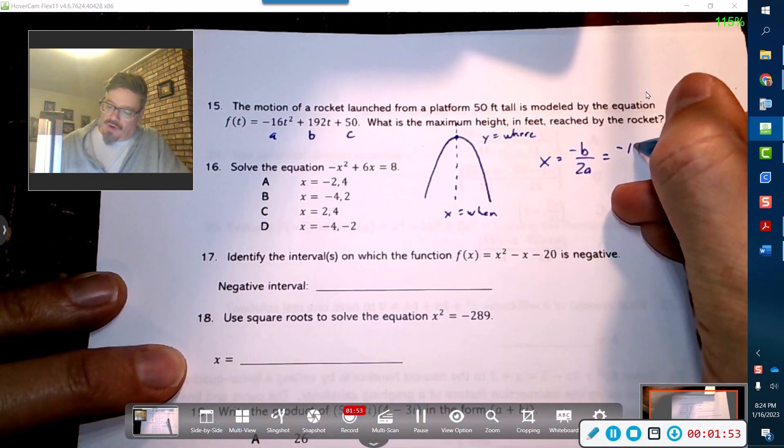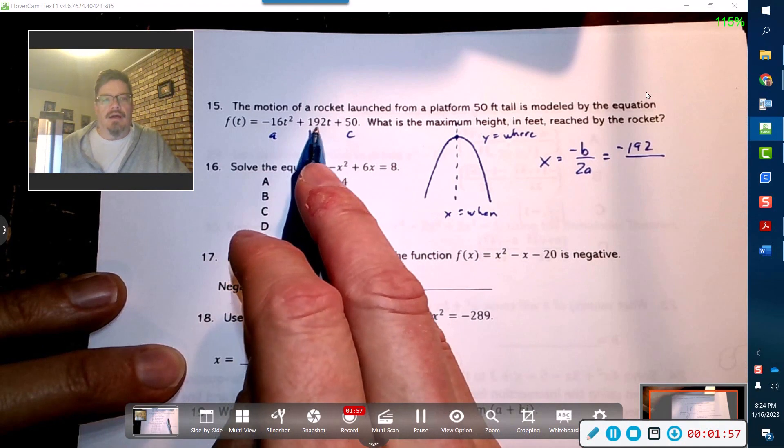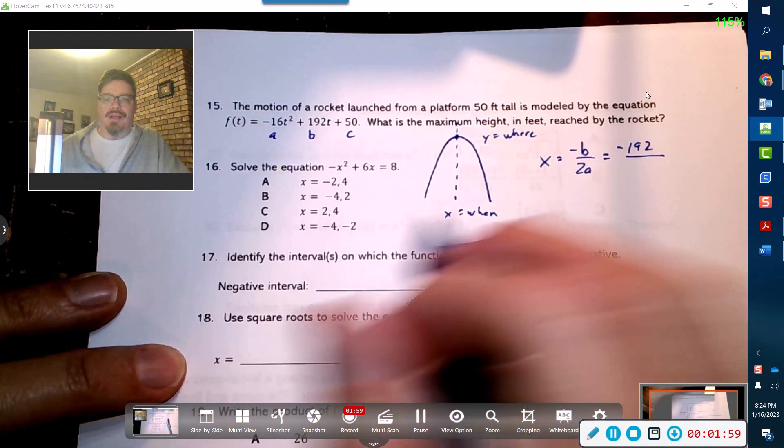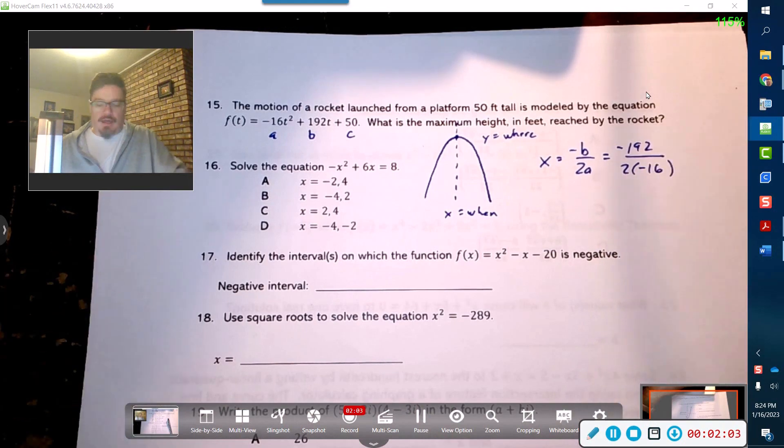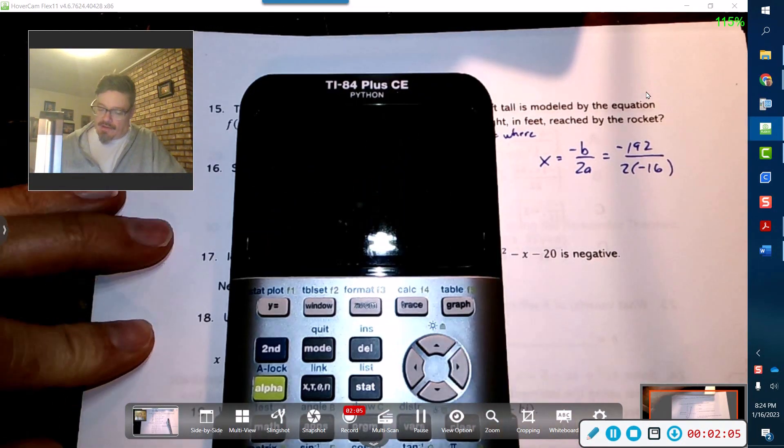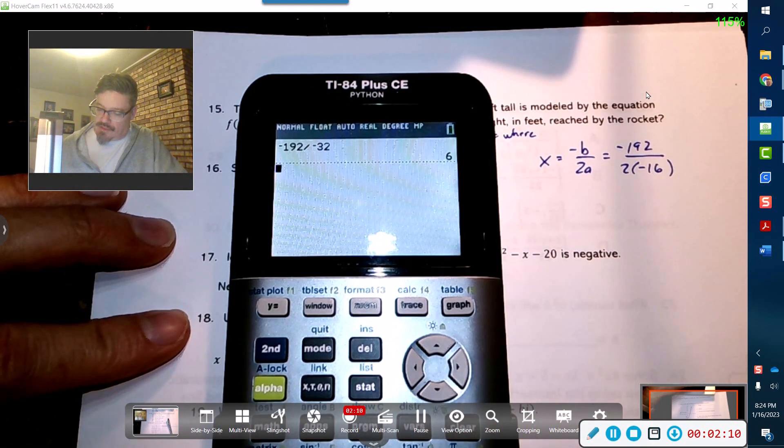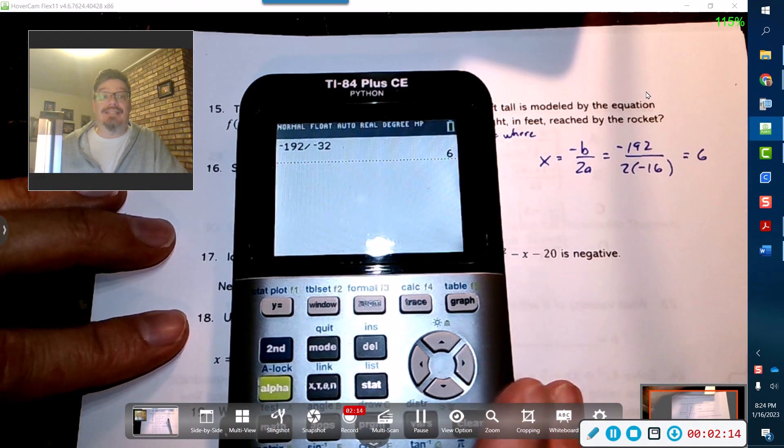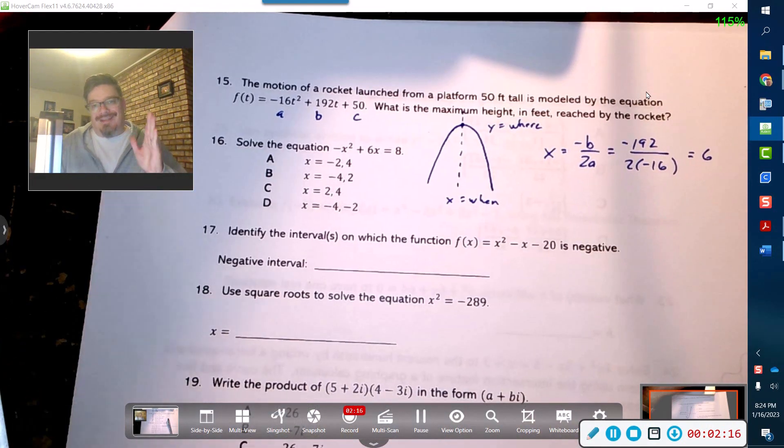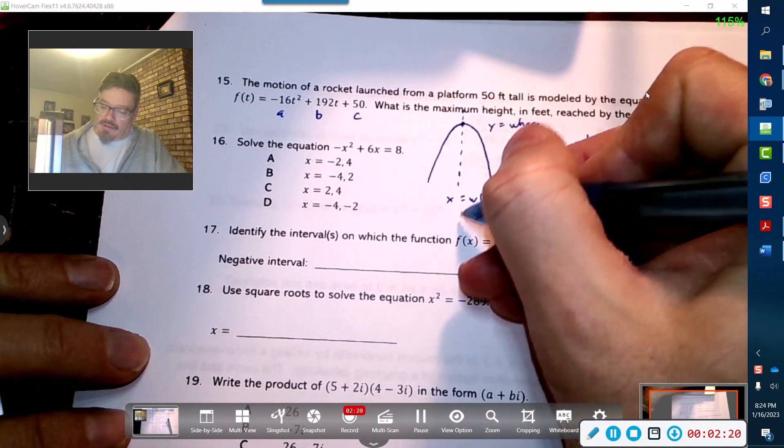We've got negative b, which is—this is our a, that's our b, and that's our c. So we're going to get negative 192. He switched his sign, and then we're going to get two times negative 16. I'm going to use my calculator to figure out when this occurred. Negative 192 divided by negative 32 should be positive, and it looks like this happens at six seconds. So this thing launched and then six seconds later it reaches its maximum height.